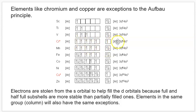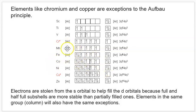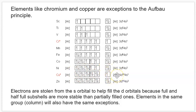Both d (which can hold 10) and s (which can hold 2) are now half-full with 5 and 1 respectively. Once we get to manganese, we fill up the s subshell again; we still have 5 in d. Then iron, cobalt, nickel continue filling up. A similar situation happens with copper — we'd expect 3d9 and 4s2, but instead one is removed from s and put in d, so 3d9 becomes 3d10. We have a full d subshell and half-full s subshell, giving copper the configuration 4s1, 3d10. Zinc then adds that last electron back to 4s.